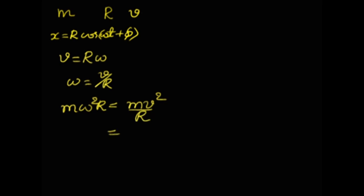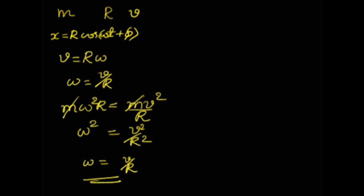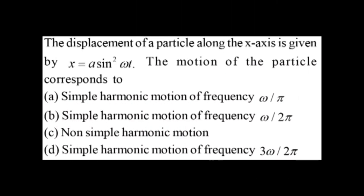From the force balance, m cancels on both sides giving ω² = v²/R², so ω = √(v²/R²) = v/R. Therefore option A, ω = v/R, is correct.